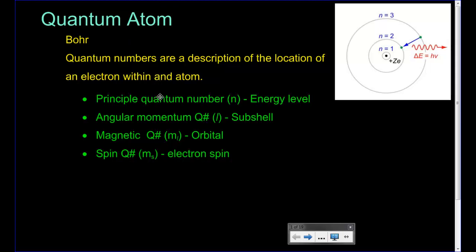The first quantum number is the principal quantum number, which simply represents what energy level we're at — whether it's the first, second, third, and so on. That's an indication of how far out on the atom we are. The angular momentum quantum number describes what happens inside each energy level — whether there are subshells. The magnetic quantum number describes the orbitals, or the shapes that exist inside those subshells.